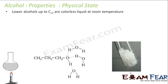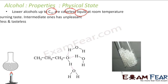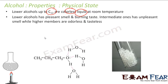We'll start with the physical state. The lower alcohols are generally colorless liquids at room temperature. The lower alcohols also have a pleasant smell and they have a burning taste. The intermediate ones don't have a good smell — they have a bad smell. The higher ones are not having any smell or taste. The lower ones are liquid, have a good smell and burning taste, and that's why they are also used for beverages and drinks.